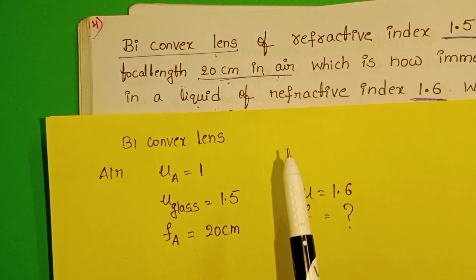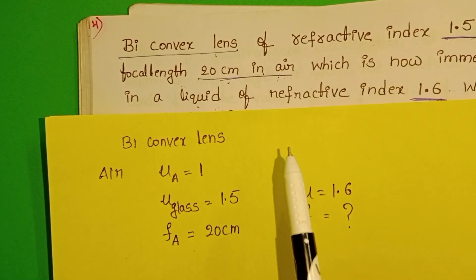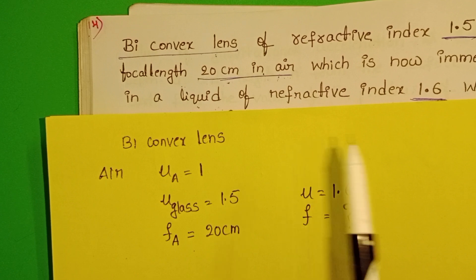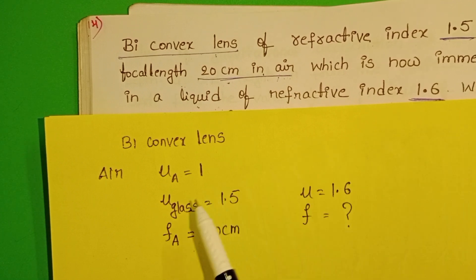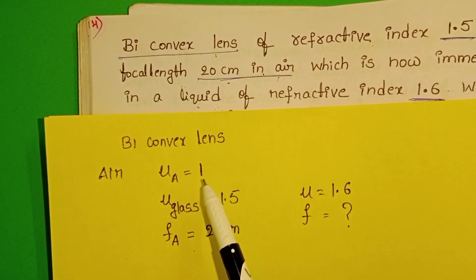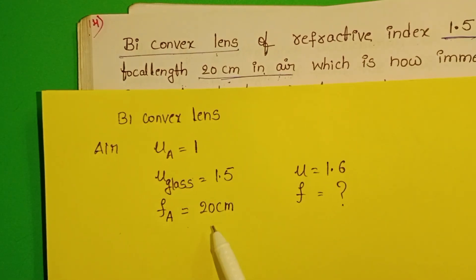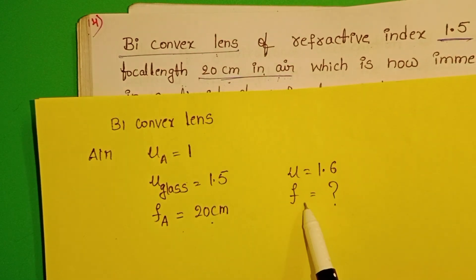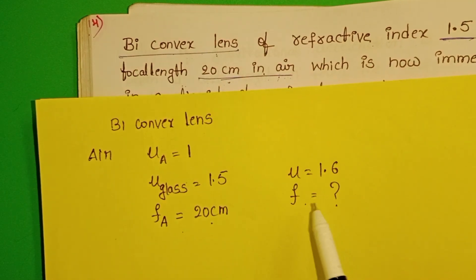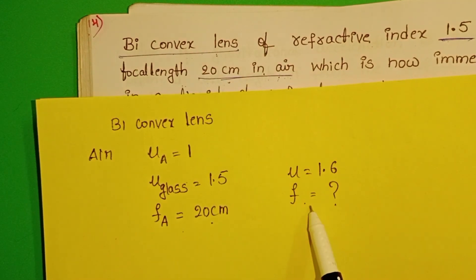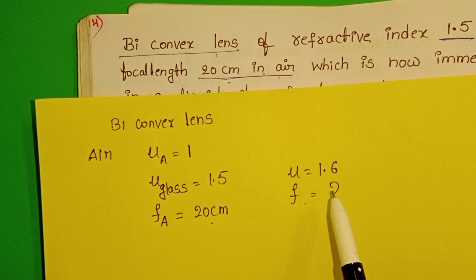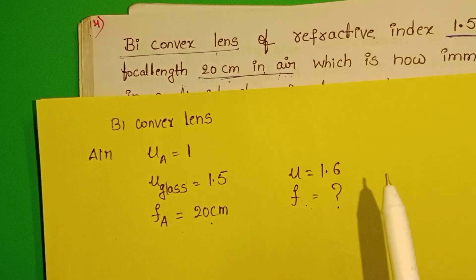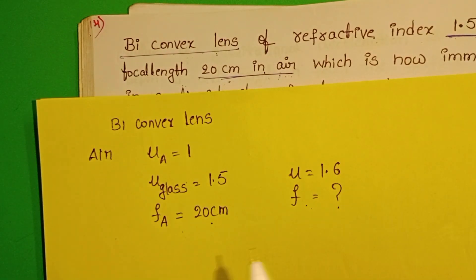The focal length of the lens also depends upon the medium in which it is placed. Whenever it is placed in air medium, the focal length is 20 cm. But we have to find out the focal length of the lens when it is placed in the liquid medium.